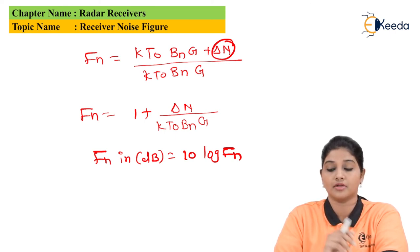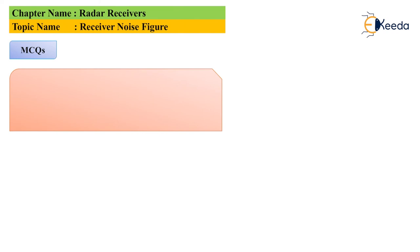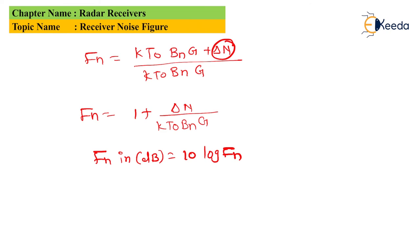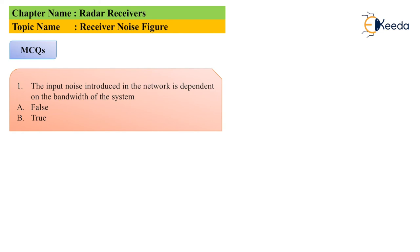MCQ 1: 'The input noise introduced in the network depends on the bandwidth of the system' — True or False? From the noise figure equation FN = (KT₀BNG + delta N) / KT₀BNG, we can see that BN is the bandwidth. Therefore the noise figure depends on the bandwidth, and the answer is True — the input noise introduced in the system does depend on the bandwidth.